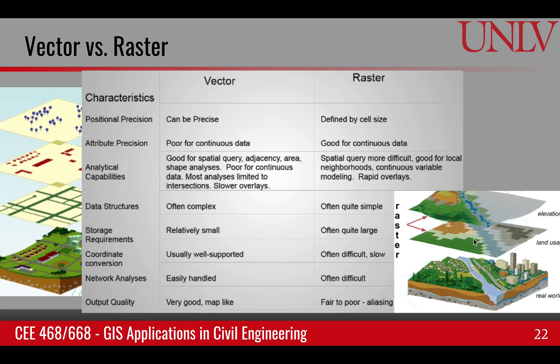To be really accurate in raster, you need very fine resolution. For example, if you were trying to identify a coin on the surface, then one meter resolution is not even going to be able to locate that coin. So when we talk about positional precision, vector data is very precise.